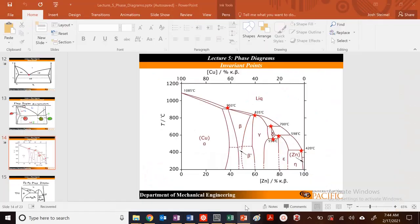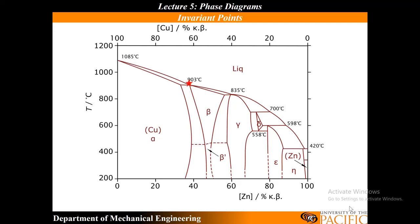Going back to the diagram: we have a eutectic here, a congruent melting point, a peritectic, and a eutectoid. Here, delta plus liquid goes to epsilon — that is a peritectic. And epsilon plus liquid goes to eta — also a peritectic. You can start to identify all these kinds of regions in the phase diagram.